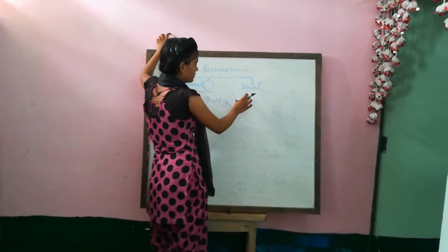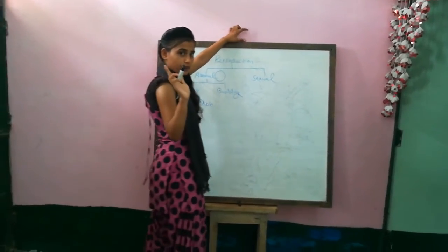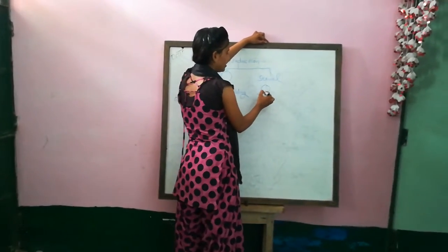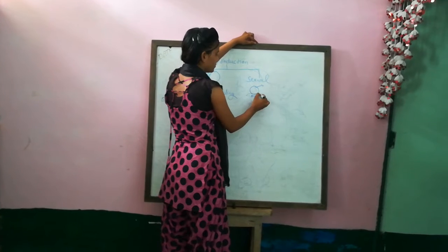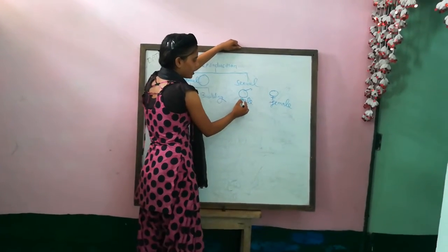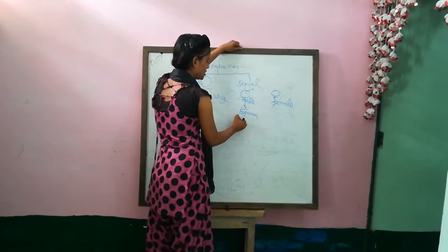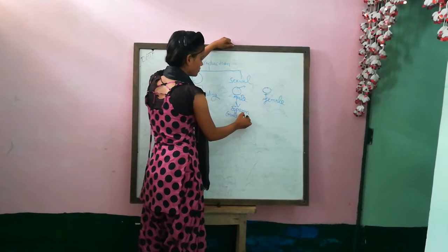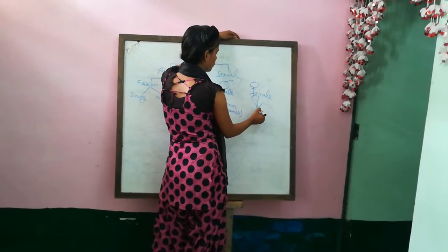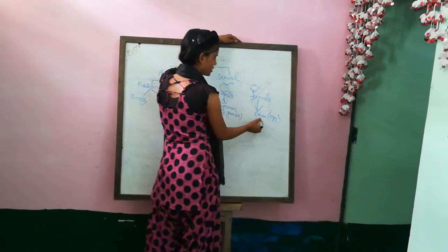In Sexual Reproduction, one male and one female take part. The male forms a male gamete known as sperm, which is the male gamete.